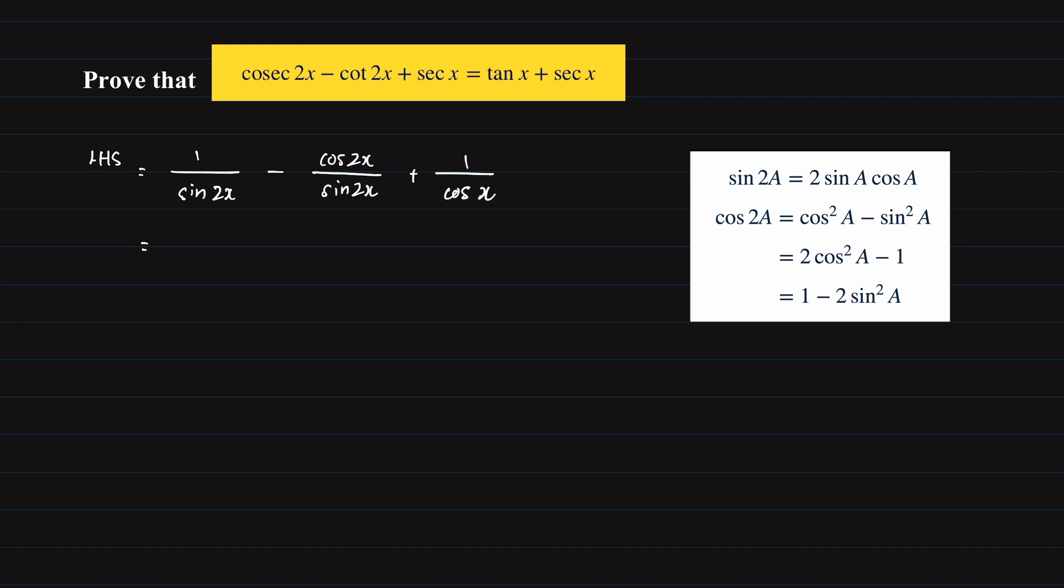Simplifying by combining the denominators, we will have 1 minus cosine 2x over sine 2x. Now, in the last term, we will multiply 2 sine x on the numerator and the denominator so that the denominator can resemble sine 2x, which is on the first term.